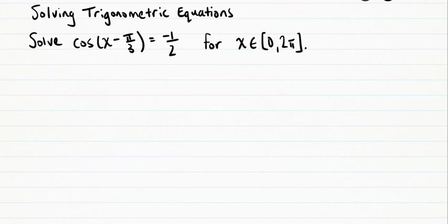We look at this ratio of negative 1 over 2 and recognize that the cosine ratio is negative in quadrants 2 and 3.